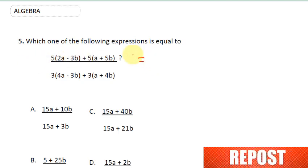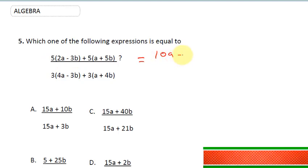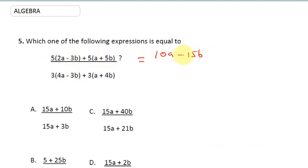To solve this, all I'll do is expand the bracket. So 5 times 2a, I'm going to get 10a. 5 times minus 3b, this would be minus 15b. Plus 5 times a will be plus 5a, and plus 5 times 5b is going to give me 25b.